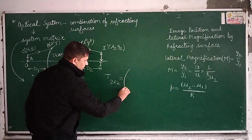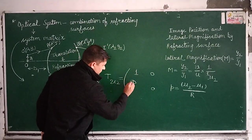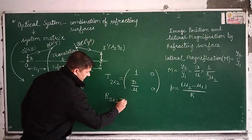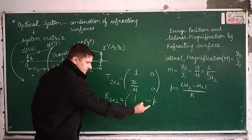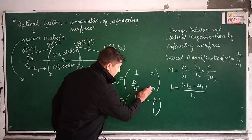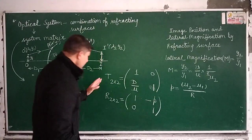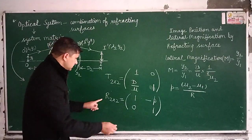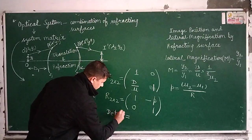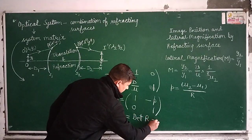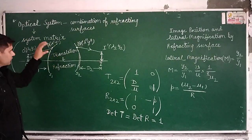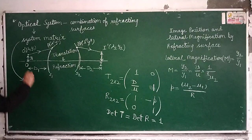The translation matrix is a 2×2 matrix given by [[1, 0], [d/μ, 1]], where d is the translation distance and μ is the refractive index of that medium. The refraction matrix is also a 2×2 matrix given by [[1, −P], [0, 1]], where P is the power of the refracting surface. The determinant of both the translation matrix and the refraction matrix equals one. The system matrix is a combination — a product — of translation and refraction matrices.